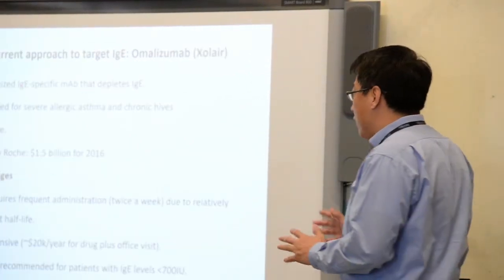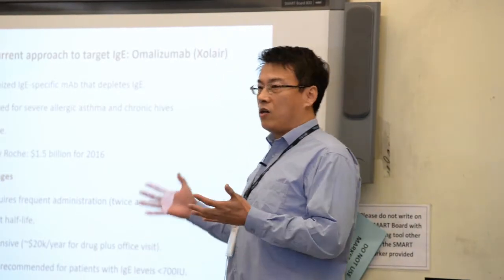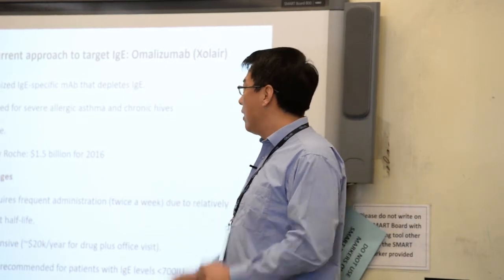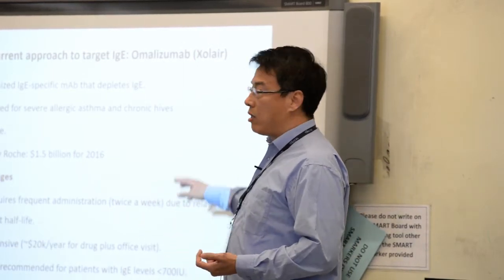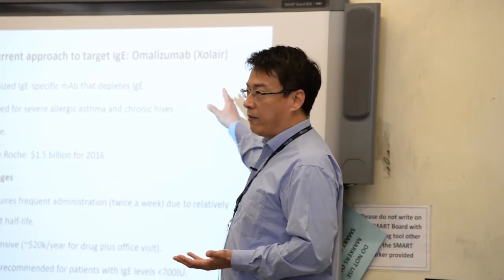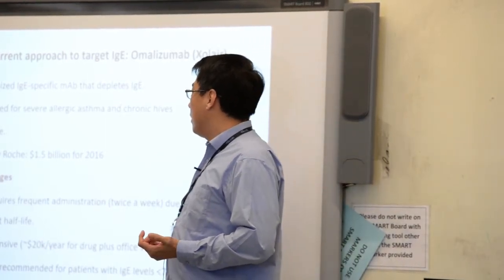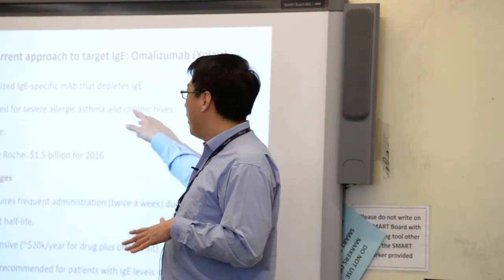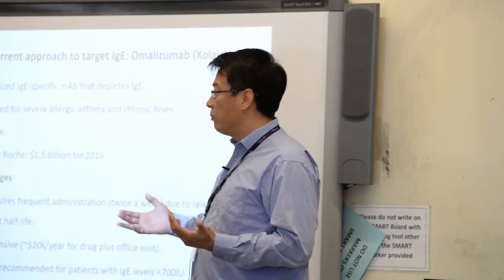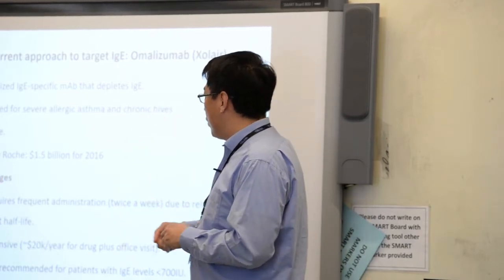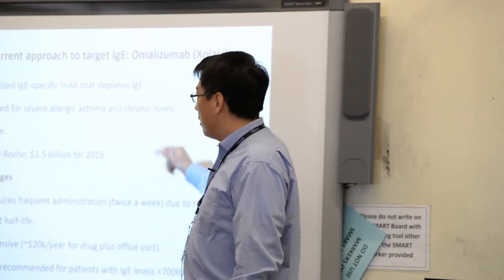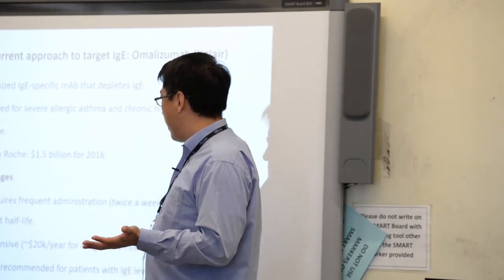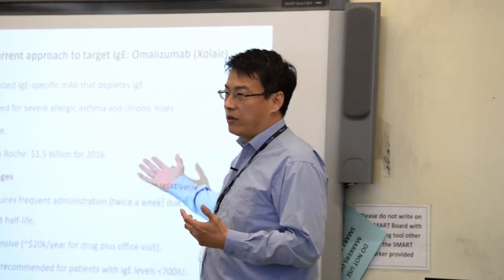If IgE is the key mediator of allergies, it follows that if we can suppress IgE, you can manage the allergic symptoms. There is indeed such a drug called omalizumab or Xolair, the brand name. It's a humanized monoclonal antibody that binds to IgE and depletes it from your bloodstream. It's approved for severe allergic asthma and chronic hives, and it's very effective. It's sold by Roche and they make $1.5 billion per year.